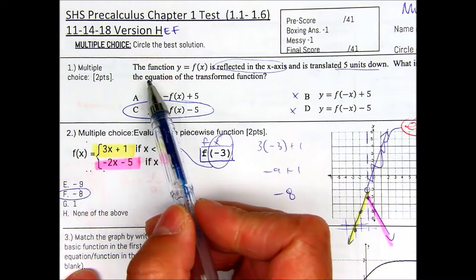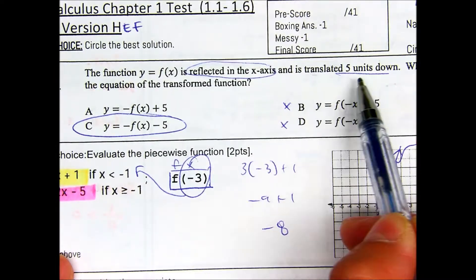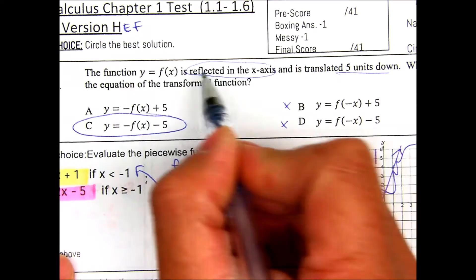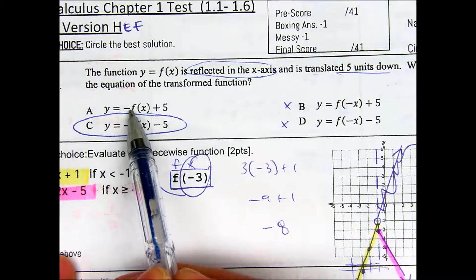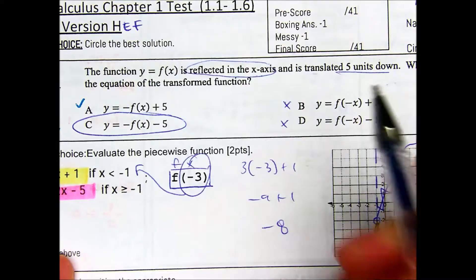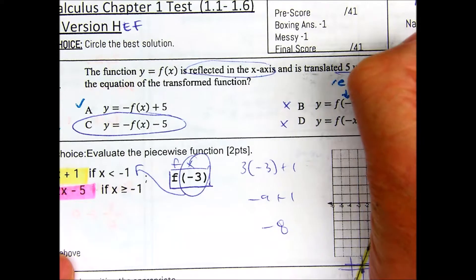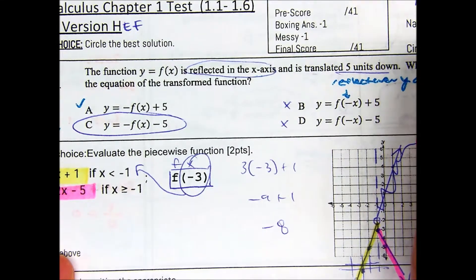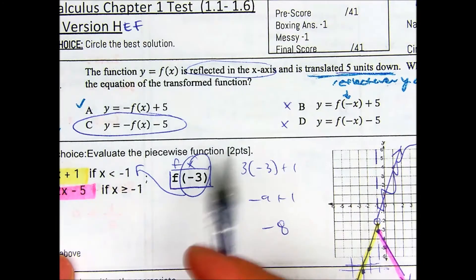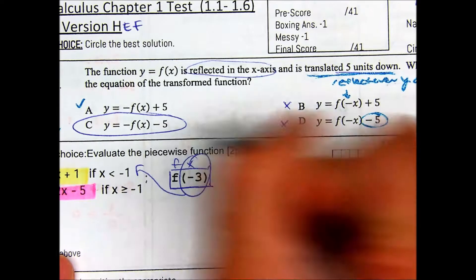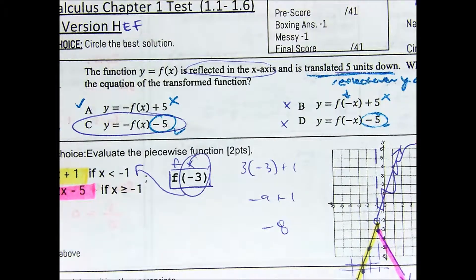Question number one: the function y equals f(x) is reflected over the x-axis and is translated five units down. What is the equation of the transformed function? When you see the word reflected in the x-axis, this is a negative sign on the outside of the parentheses. So this would match and this one would match. Notice how these have negative signs on the inside - these would be reflections about the y-axis. When it says translated down five units, this is on the outside of the equation. So down is minus five. Plus five here means going up. So the correct answer is C.